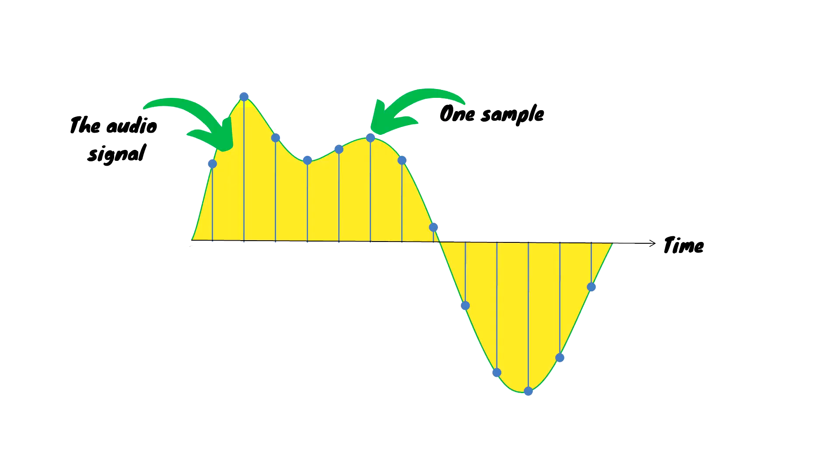Whenever we record audio, it starts off as an analog signal, whether that audio is coming from a guitar or from the signal from your microphone — it's all analog. For your computer to be able to understand that audio signal, it needs to be converted into a digital signal, which is normally a job for your audio interface. During this process, lots of samples or snapshots of the audio are taken, and those snapshots are taken so fast that the audio can be represented in full on the digital system. The sample rate is how many of those snapshots are taken of the audio every second.